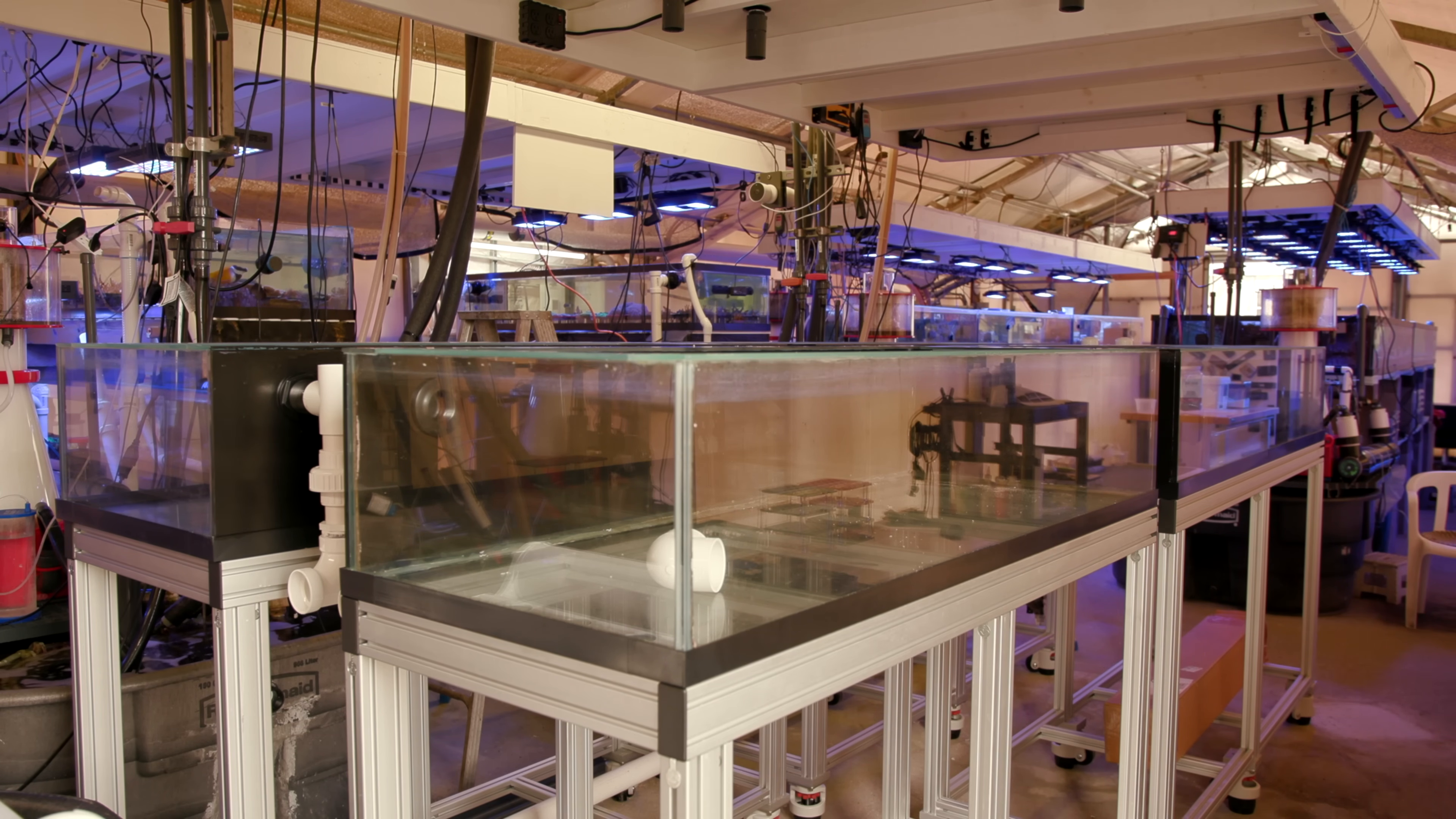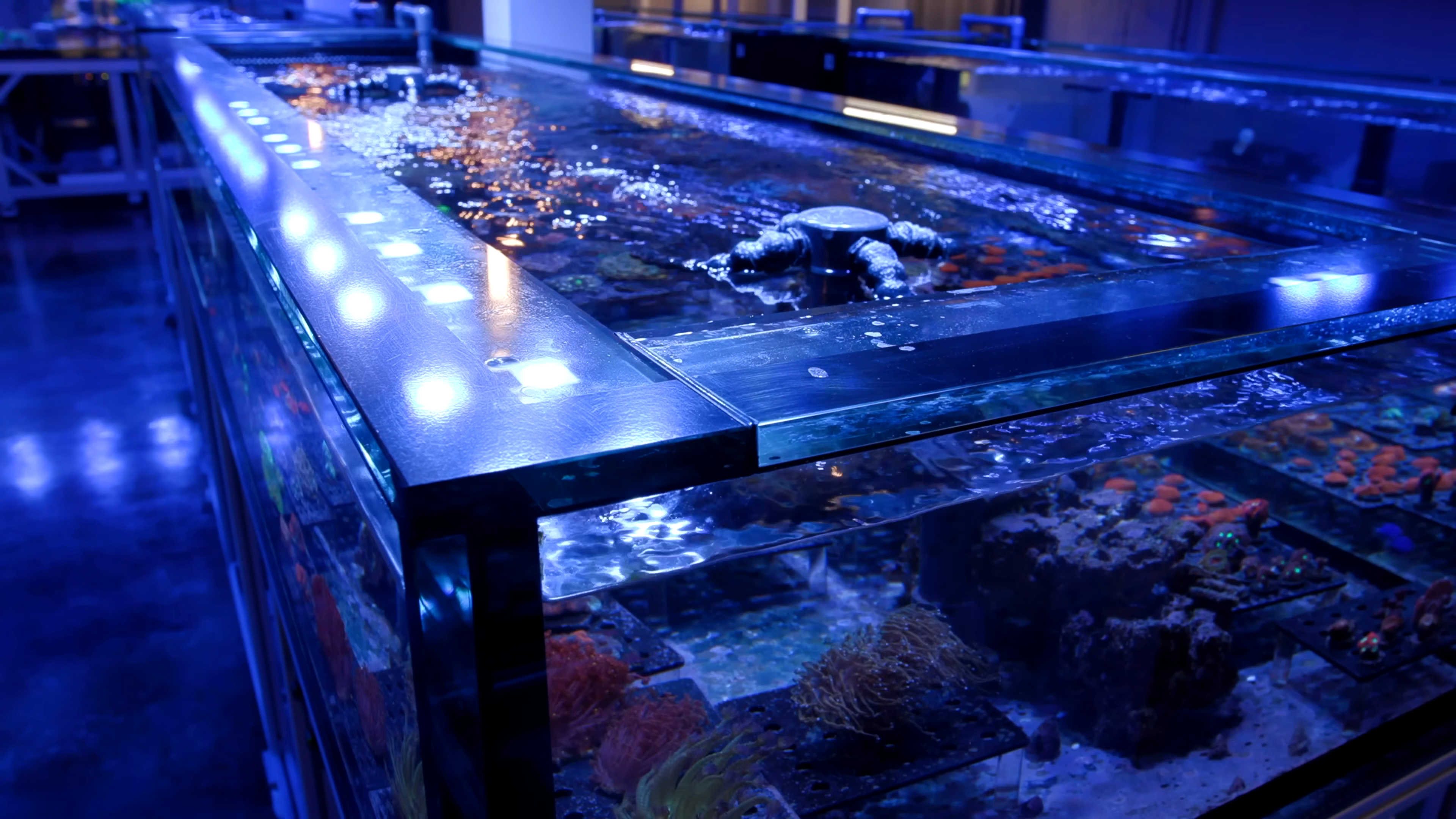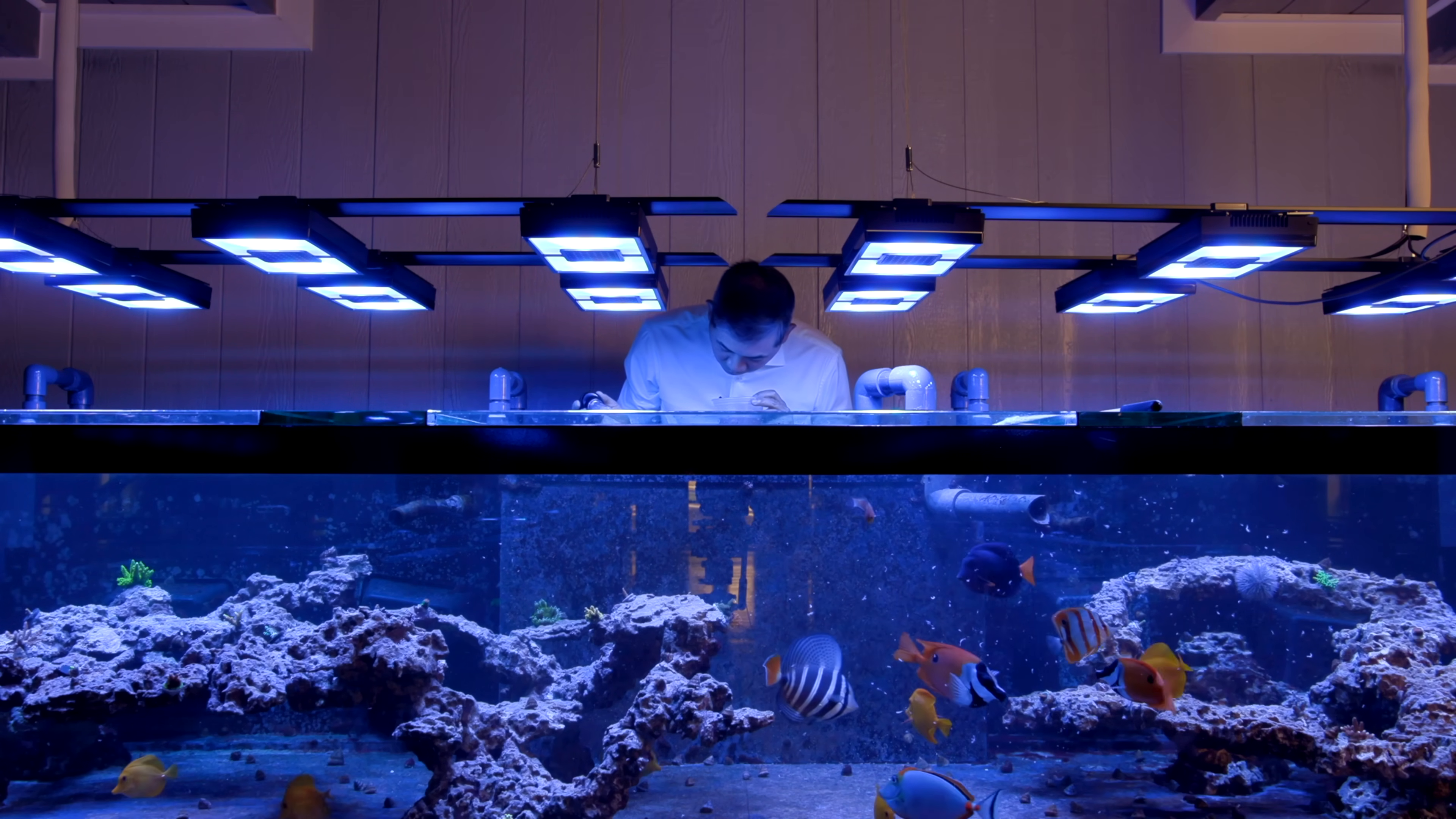The first modification that we did was we added a full euro brace to the top of the tank. Over the years I have become a very big fan of euro bracing. Obviously there are some structural components there, but mainly I like the ergonomics of being able to set stuff on them and also they do a really good job of preventing fish jumping out. Fish can still make it out, but the number of fish that it prevents from jumping out is so worth it.